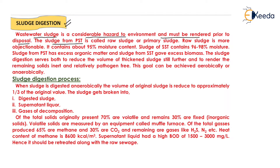The sludge from the primary sedimentation tank is called raw sludge or primary sludge. Raw sludge is more objectionable as it contains about 95% moisture content. Sludge from the secondary sedimentation tank contains 96 to 98% moisture. Sludge from the primary sedimentation tank has excess organic matter, and sludge from the secondary sedimentation tank gives excess biomass.